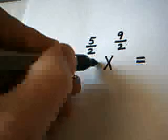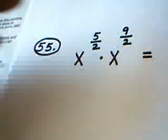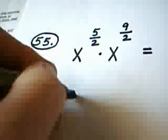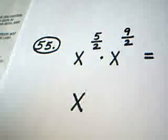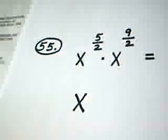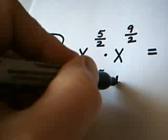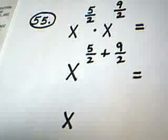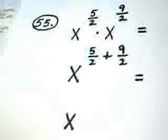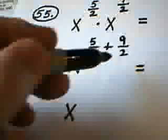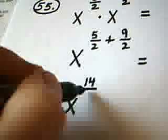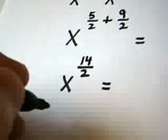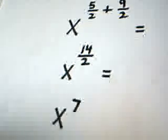Here's what you need to remember: when you have a base raised to a power and you're multiplying that by the same base raised to another power, you leave the base alone — so the x does not change — and when you're multiplying, you add the powers. So we have 5 halves plus 9 halves as our new exponent. Since these already have the same denominator, this is a pretty easy problem. 5 halves plus 9 halves becomes 14 halves, and 14 divided by 2 is 7, so we've got x to the 7th power.